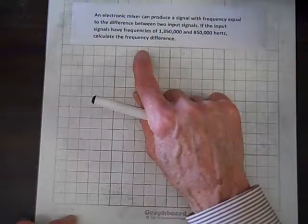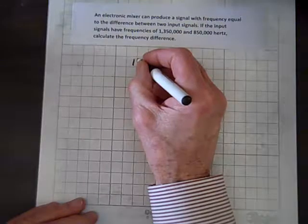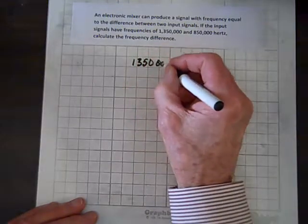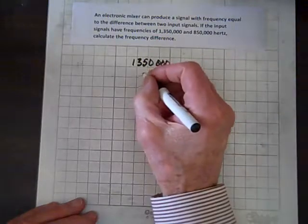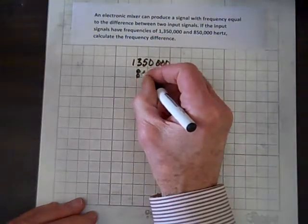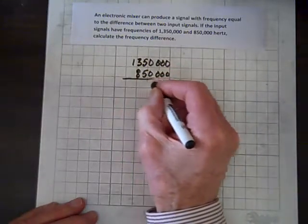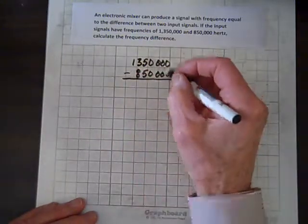So we just have to subtract. So we've got one, three, five, oh, and three more zeros, and then 850, and three more zeros, 850,000. We'll do a little subtraction.